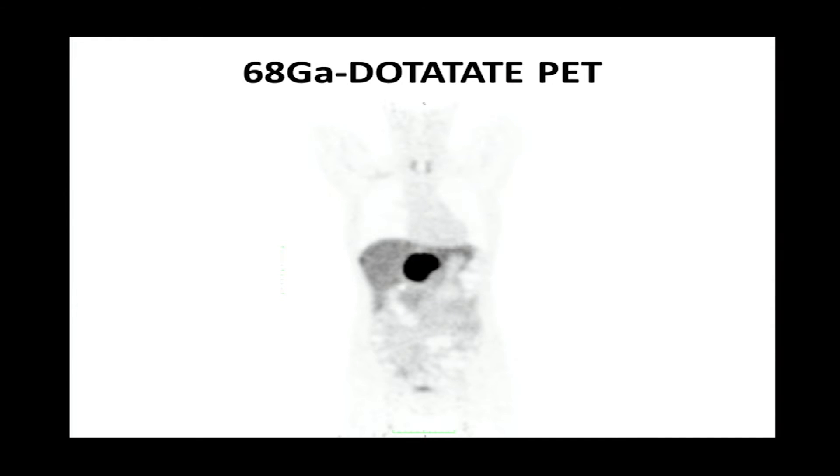This is an example of a gallium dotatate scan. Dotatate is an octreotide analog labeled with gallium-68, which is a positron-emitting isotope. You inject it into the body, an hour later you take a picture with a PET scanner. Somatostatin receptors are not only present in tumor cells — they're also present in normal cells, so some things that light up on a scan represent normal physiologic uptake in certain organs such as the pituitary gland, the thyroid gland, the liver, and the gut.